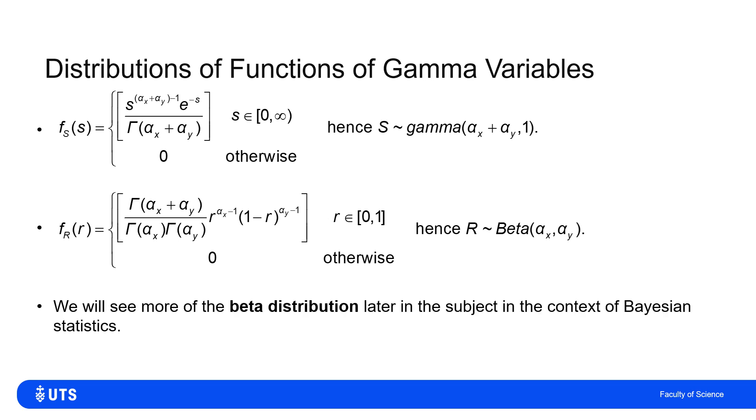Now we will see more of that later in this subject, particularly in the context of there's some Bayesian statistics, because the distribution that strictly never goes below zero or never above one can be very handy in some probability settings.